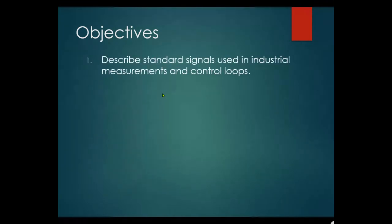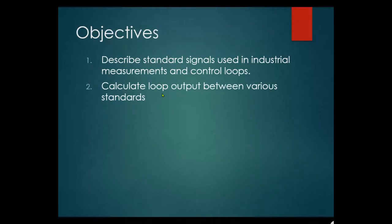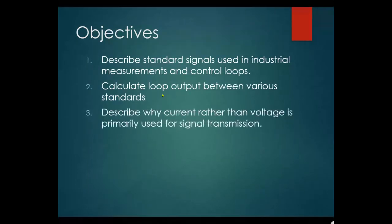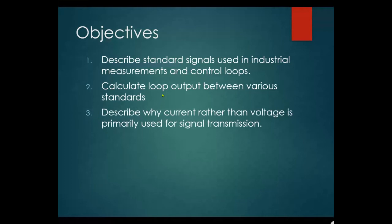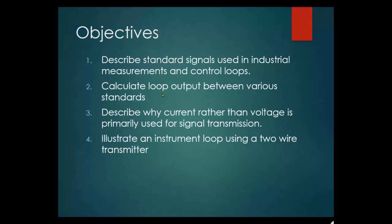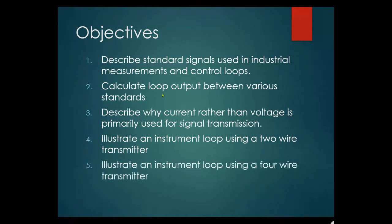Objective one: describe the standard signals used in industry measurements and control loops. Objective two: calculate loop output between various standards using the input-output formula, which we use all the time. Objective three: describe why current rather than voltage is the primary use for signal transmission. We'll also illustrate an instrument loop using a two-wire transmitter — you need to be able to hook up a transmitter, and that's very easy.